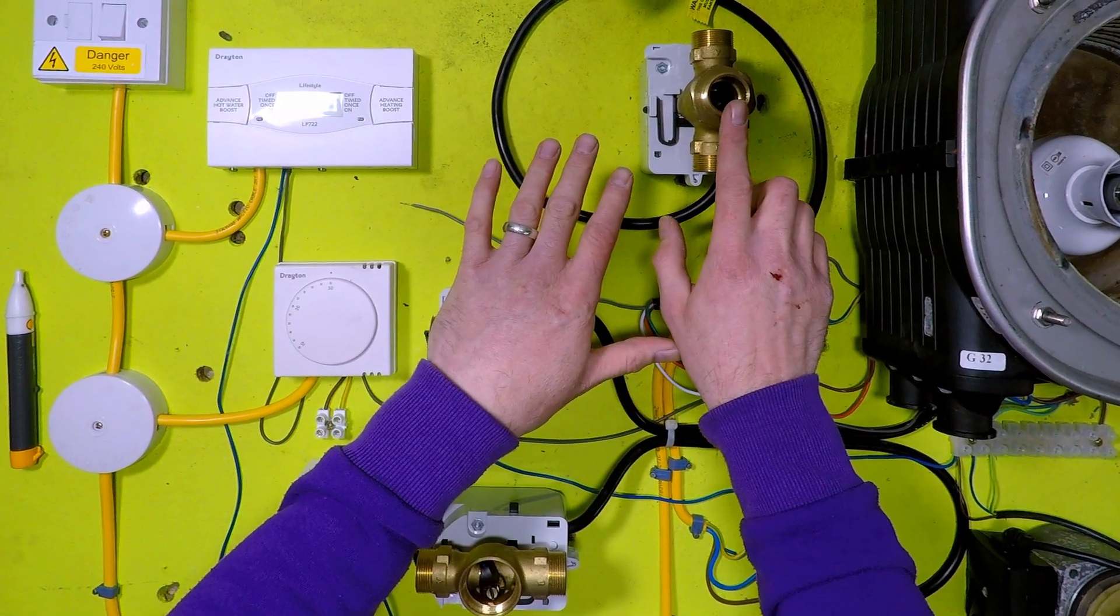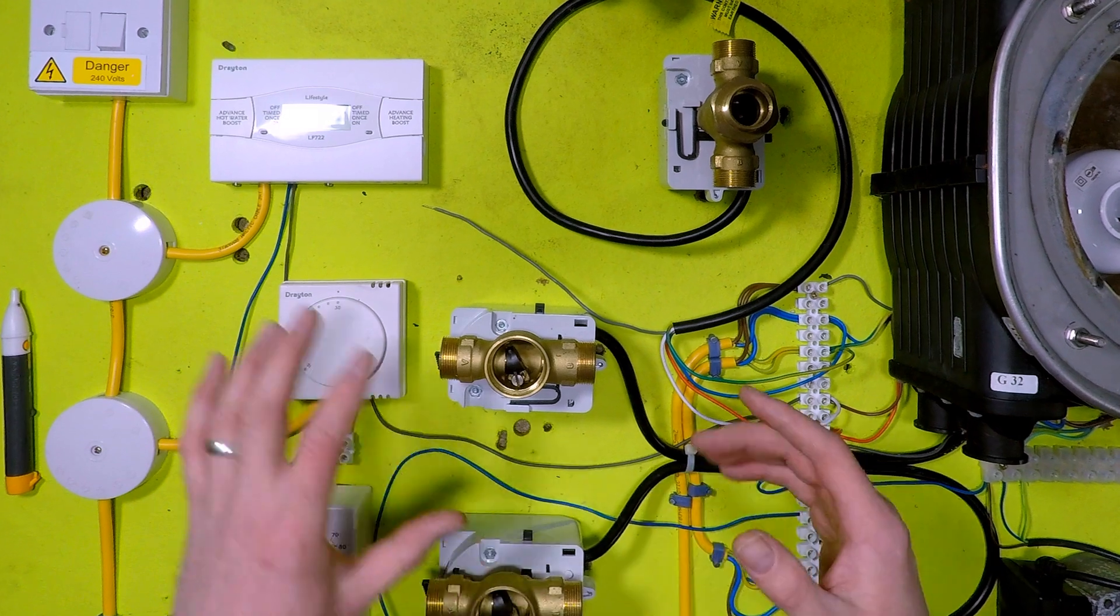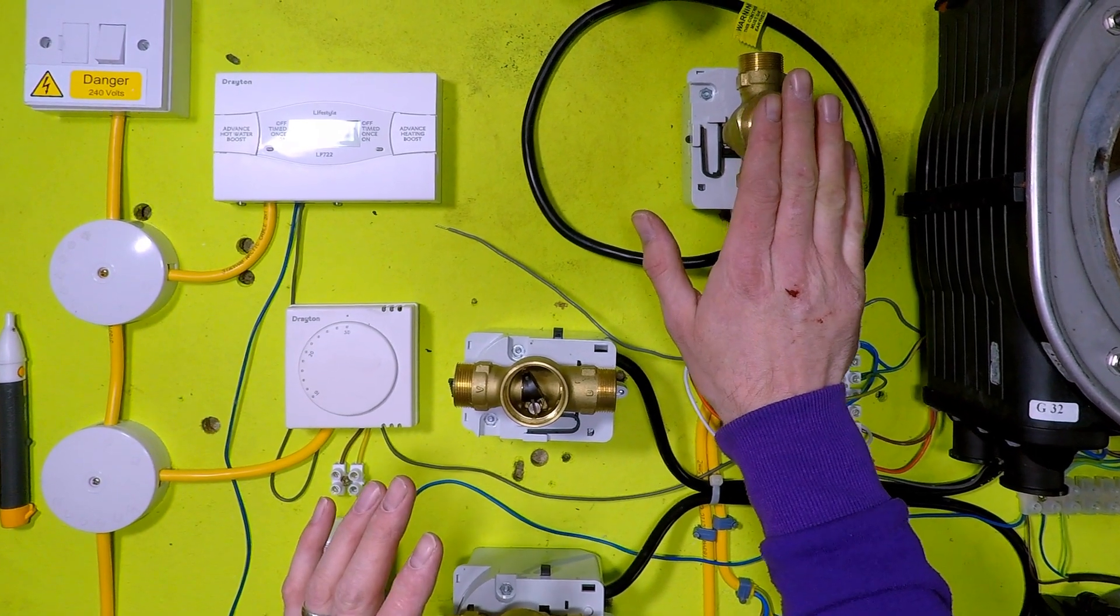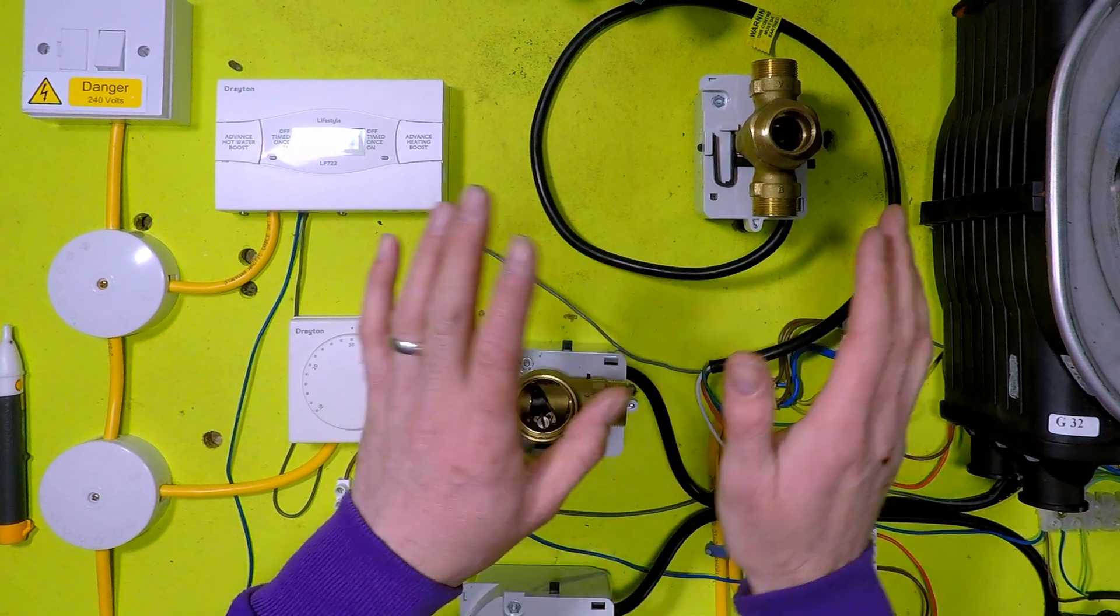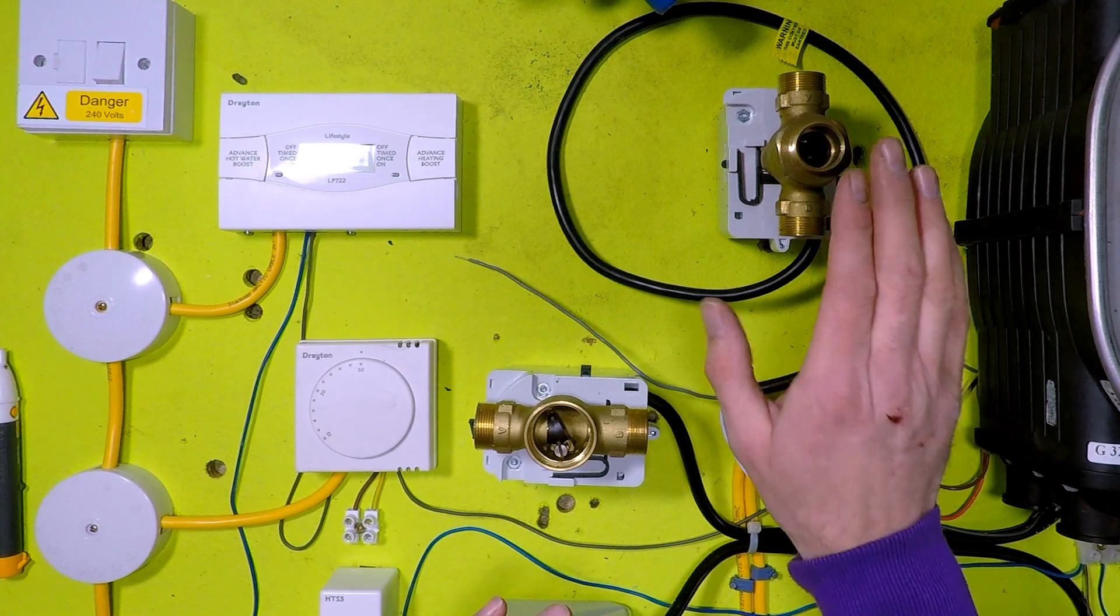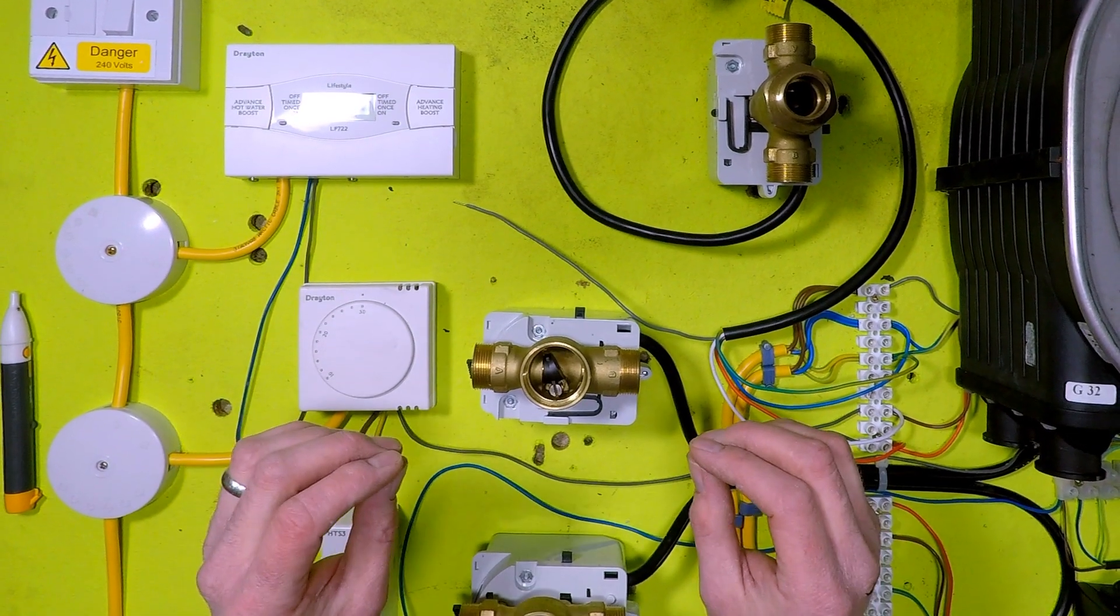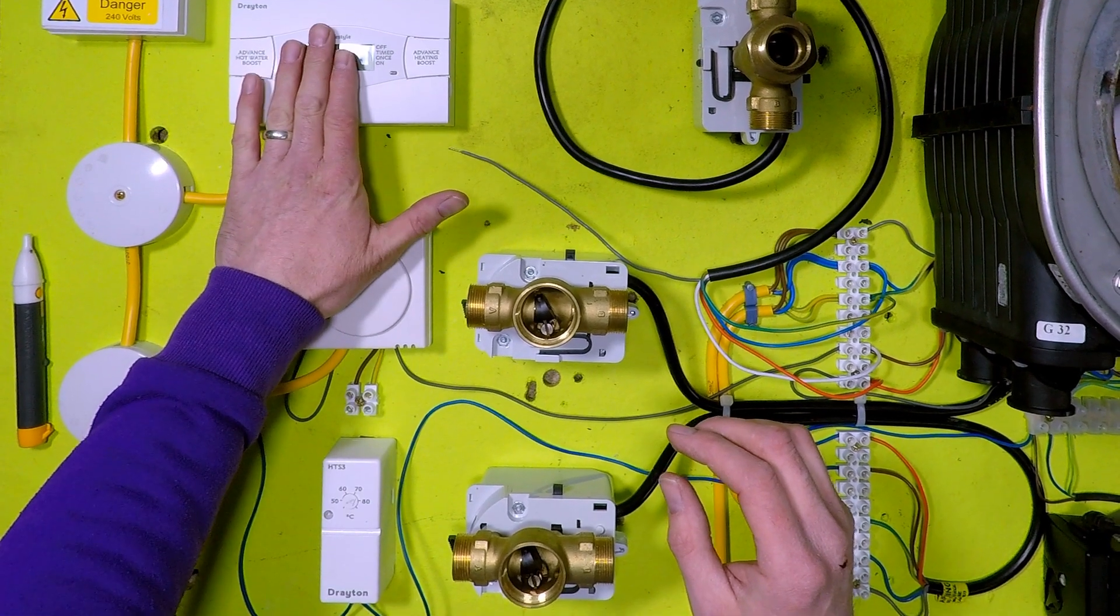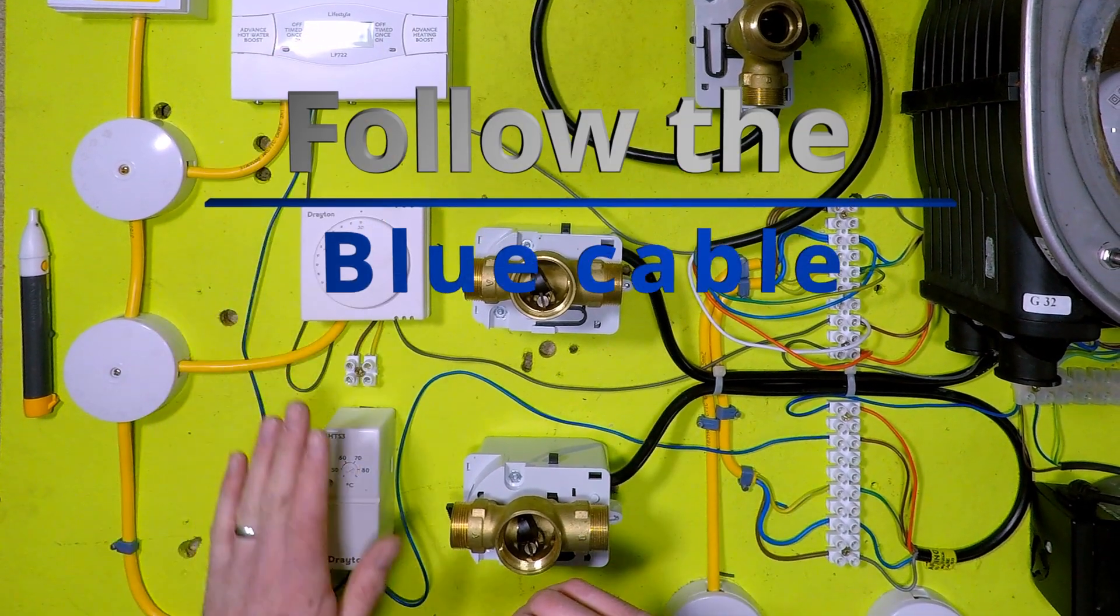Okay, I'm going to go through and explain how this valve works now. So what happens is the valve rests in hot water only. So when you have no power to this valve, it's turned off on the spur, this valve will be in hot water only mode. You create a hot water demand, what happens is you get your power in.